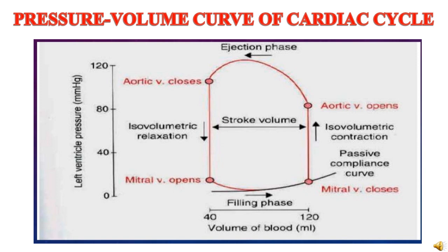The middle portion of the pressure-volume loop represents the stroke volume — 120 minus 40, approximately 80 ml. A disadvantage of the pressure-volume loop is that the time dimension is eliminated, so it is not possible to tell how fast events are occurring. However, an advantage is that the work done by the heart is instantly apparent from the area enclosed by the loop. Clinically, the pressure-volume loop can be utilized to understand pressure-volume events in changed hemodynamic states like exercise and heart failure.